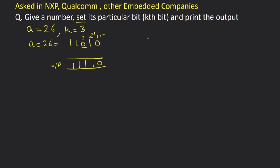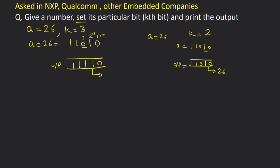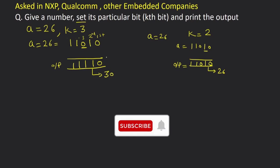Now let's take a equal to 26 but k equal to 2. We can write 26 in binary the same way. k equal to 2 means this second bit, which is already 1, so we keep it as 1 and copy all other bits. So for a=26, k=2 the output is 26, and for a=26, k=3 the output is 30.